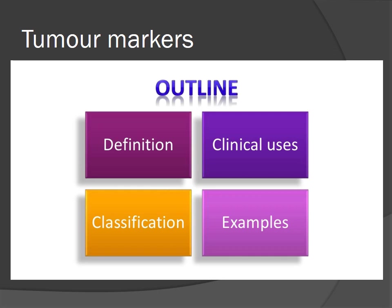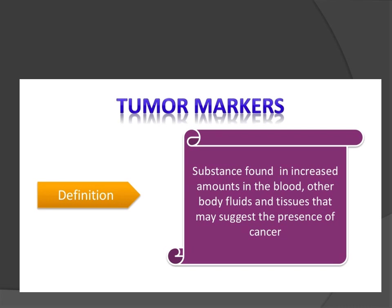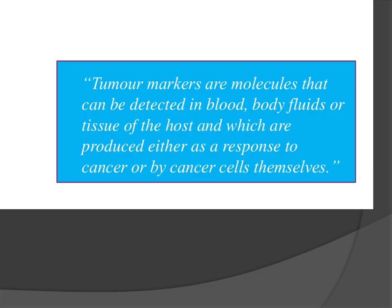Tumor markers. We will discuss the definitions, classification, clinical use, and examples. Tumor markers are molecules that can be detected in blood, body fluids, or the tissue of the host, and which are produced either as a response to cancer or by the cancer cells.